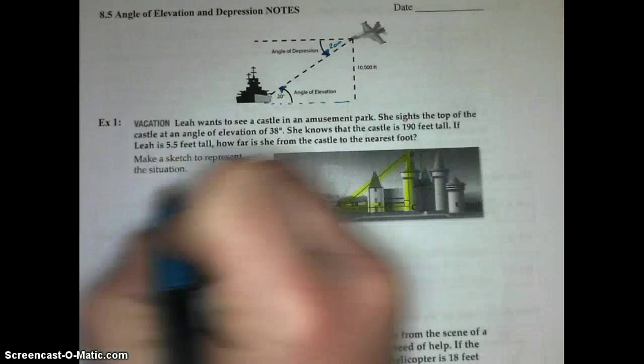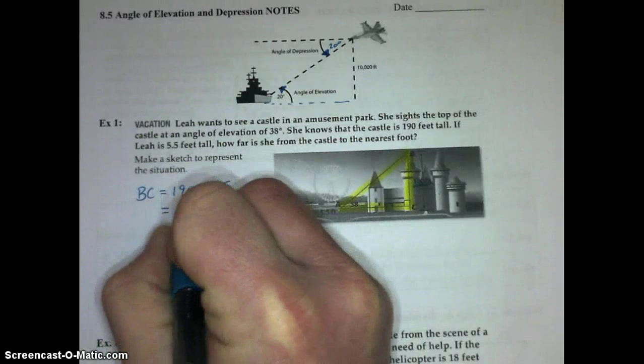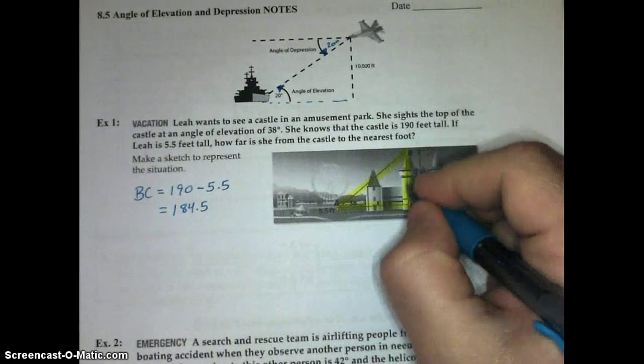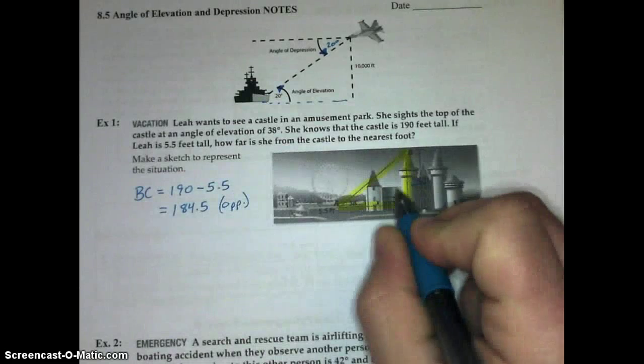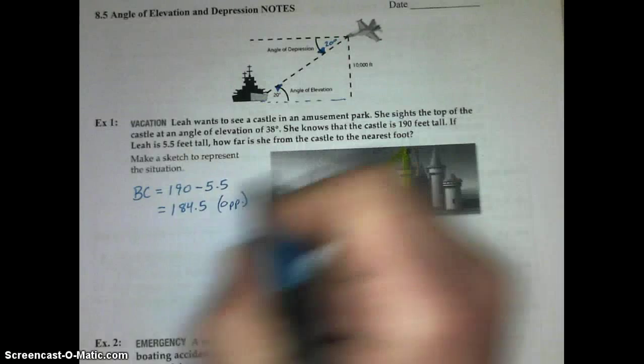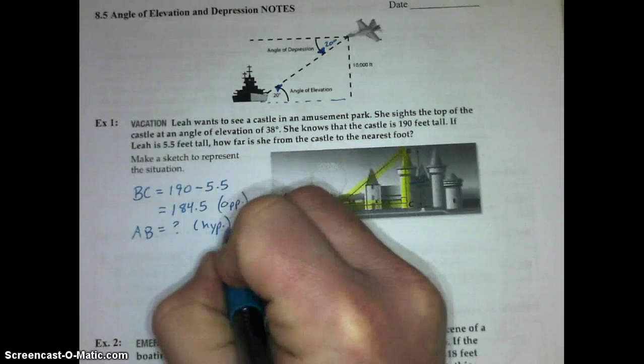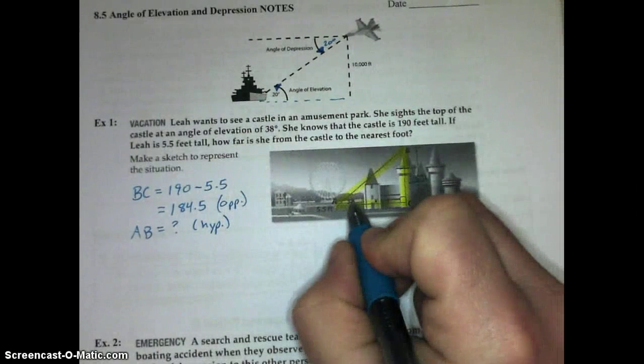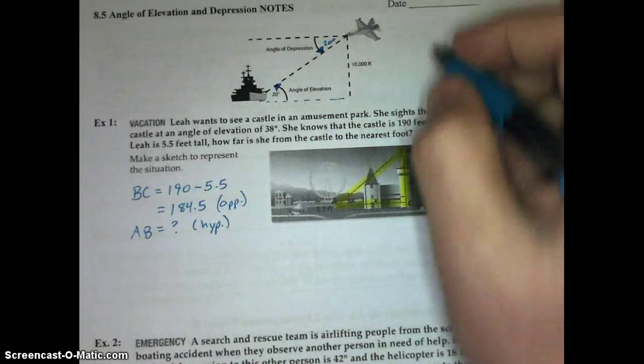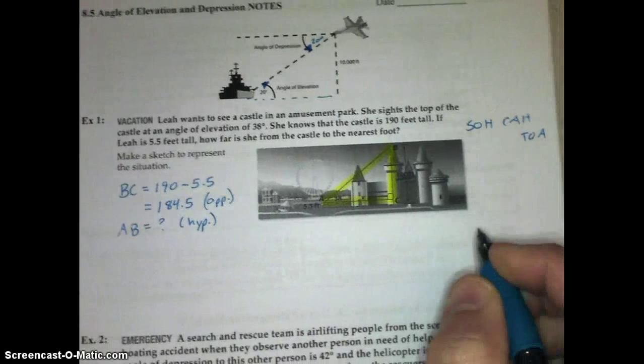She forms an angle of elevation with this horizontal line of sight from where she stands of 38 degrees. That forms a right triangle with the actual tower of the castle. The castle is 190 feet tall. If Leah is 5 foot 5, how far is she from the castle to the nearest foot? Her line of sight measures to her eyes, not to her feet. So this 5 foot 5 is what we have to take away from the 190 feet of the castle. We're going to use sine because we're using the opposite leg to find the hypotenuse.